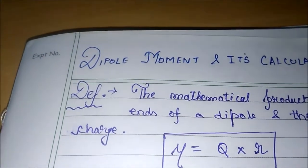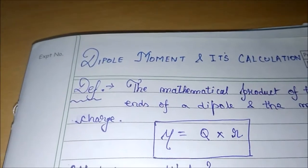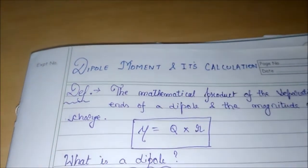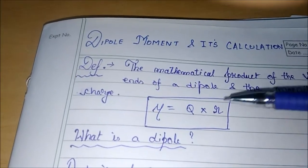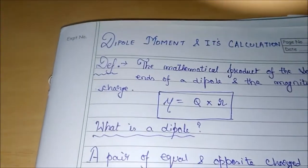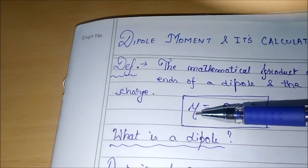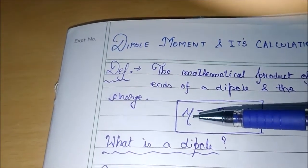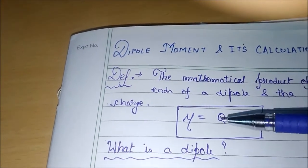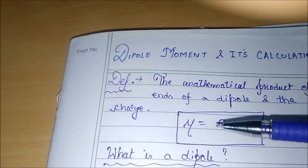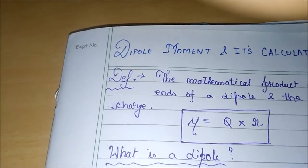Let's continue with the definition. The mathematical definition of dipole moment is that it is a product of the charge separation distance, given by this value r, and the magnitude of that charge, given by this value Q. Where μ is the dipole moment. Mathematically, we can say that μ is equal to the charge multiplied by the distance between them.